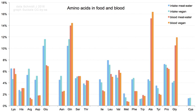In addition, cysteine, taurine, tyrosine, and arginine are considered semi-essential amino acids in children, though taurine is not technically an amino acid, because the metabolic pathways that synthesize these amino acids are not fully developed. The amounts required also depend on the age and health of the individual, so it is hard to make general statements about the dietary requirement for some amino acids. Dietary exposure to the non-standard amino acid BMAA has been linked to human neurodegenerative diseases, including ALS.